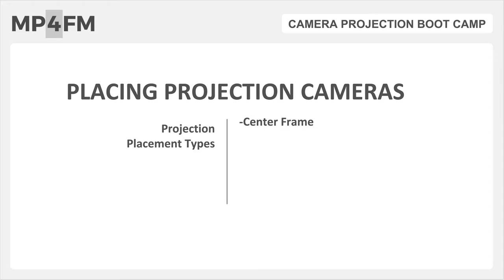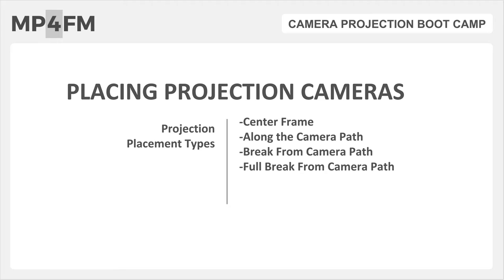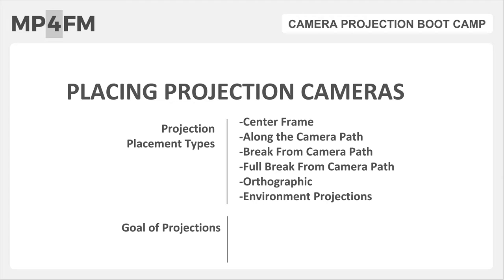In this video, we're going to be talking about the different projection placement types, which are: center frame, along the camera path, break from the camera path, full break from the camera path, orthographic, and environment projections. There are a lot of ways of placing your projection cameras, and I've taken all those ways and made basic projection placement type categories. The goal of setting up your projections is to: one, have enough resolution, and two, have enough coverage.